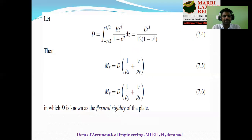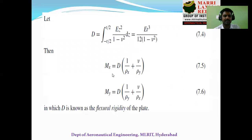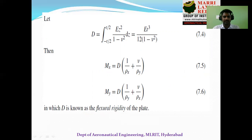Capital D is called the flexural rigidity of the plate. Replacing D in the previous equations, we rewrite: Mx = D · (1/ρx + ν/ρy) and My = D · (1/ρy + ν/ρx).